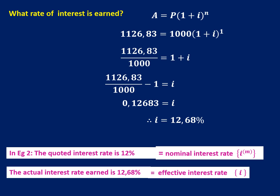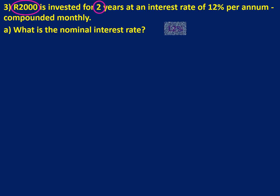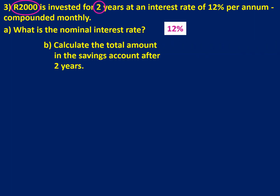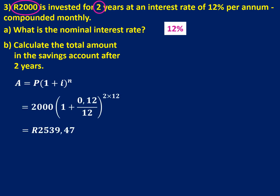Let's look at another example. I've taken exactly the same interest rate, but doubled the amount — we're going to invest 2,000 Rand for two years and see what we will have at the end. We've been quoted 12%, so our nominal interest rate is 12%. We're investing 2,000 Rand compounded monthly, so we divide the interest by 12 and multiply the years by 12. We end up with 2,539 Rand and 47 cents.